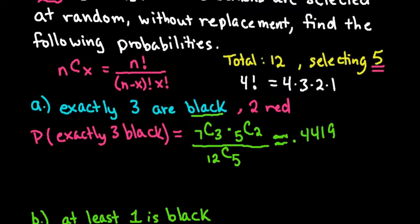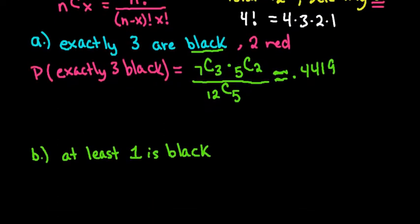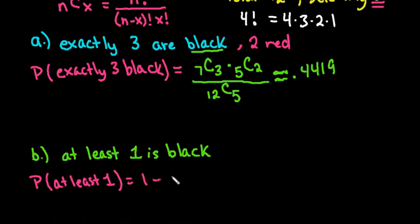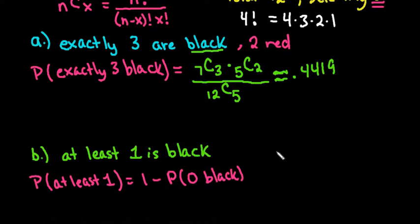For the next one — at least one black button — whenever we see 'at least one' it is easier to use the complement rule: one minus the probability of zero black ones. 'At least one' means we could have one, two, three, four, or five black buttons. Adding all those cases is tedious, so instead we use the complement rule and subtract only the case of zero black buttons.